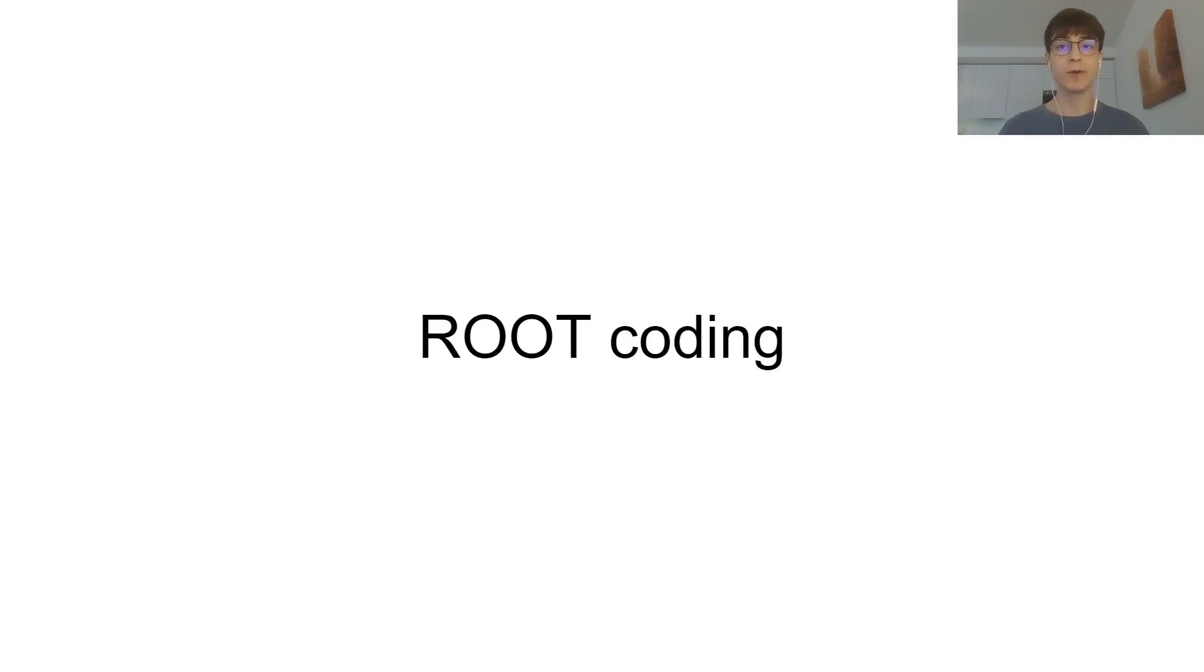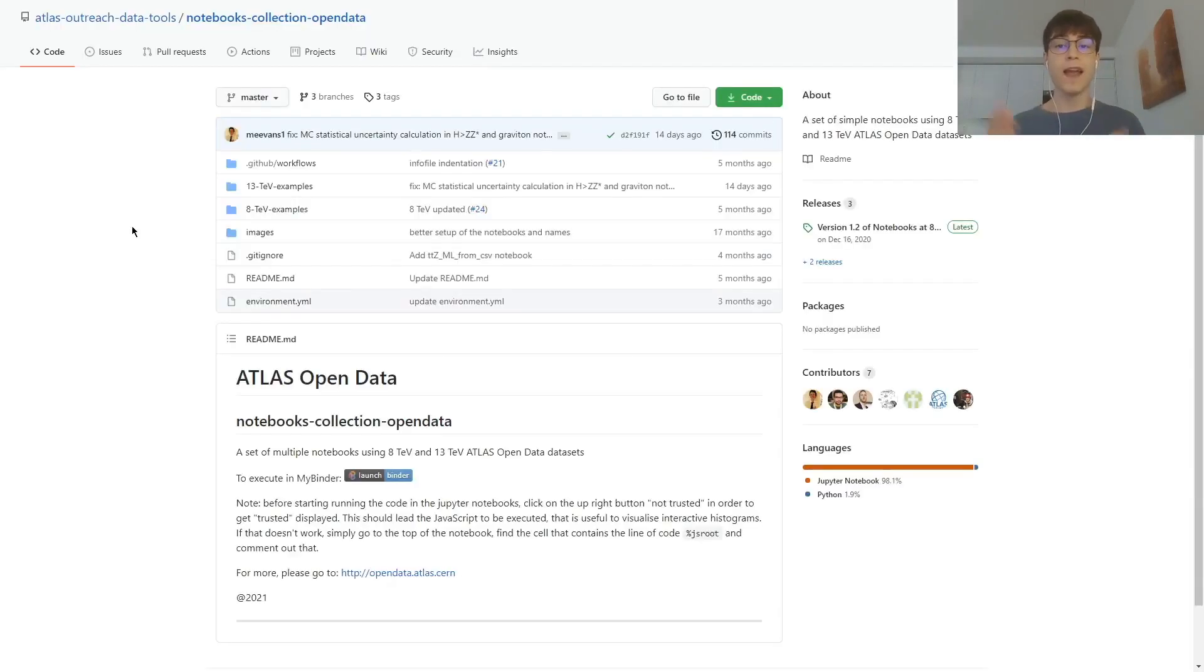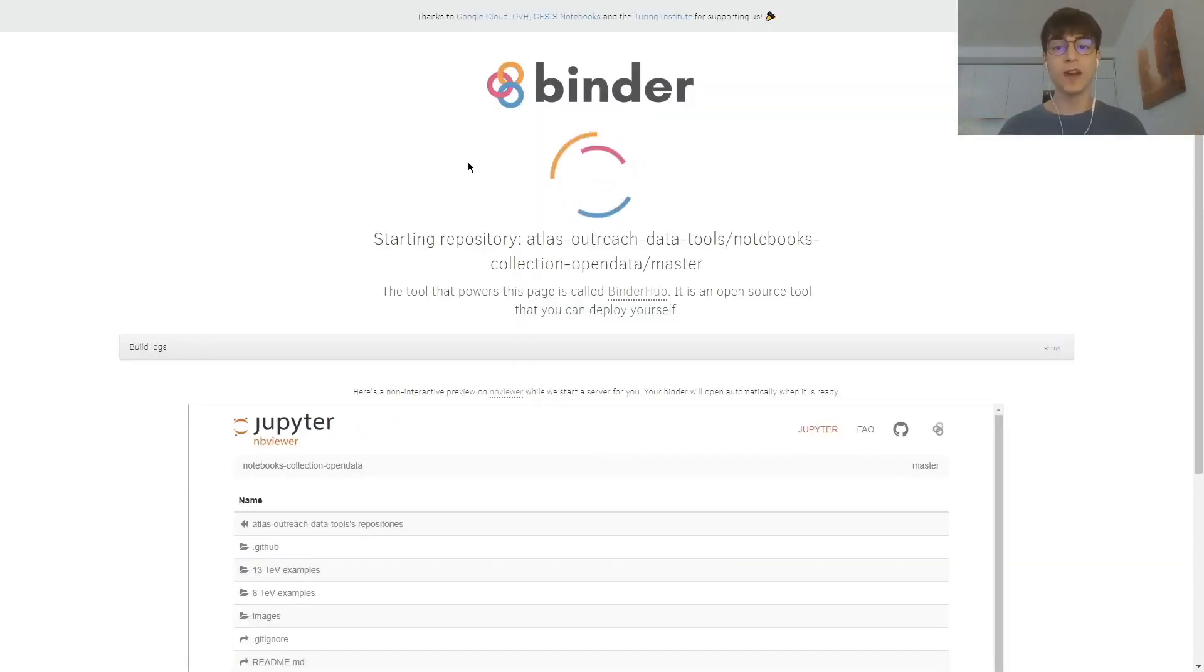Now let's move to the example of ROOT coding in a Jupyter notebook. After opening the link in the description, we click on launch a binder, which is a virtual machine, so that we can work with the code without having to download it. After you click, you're going to have to wait a little bit for the machine to start, and then we'll see all the repository with the files we need for the analysis.